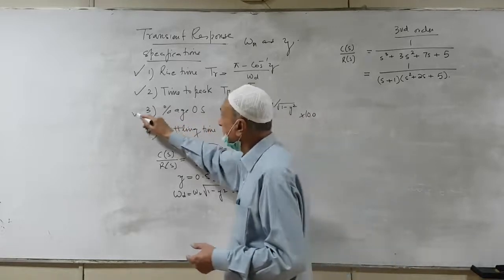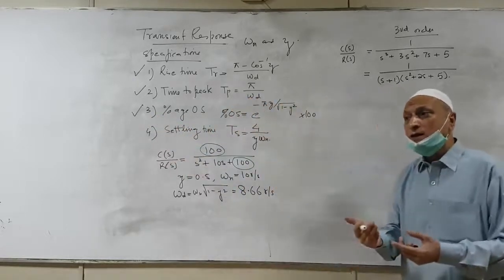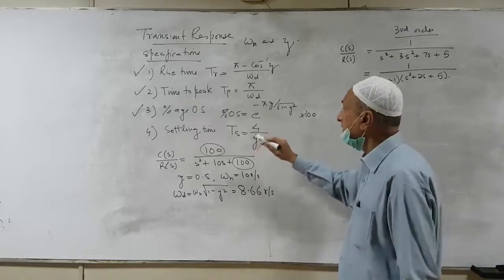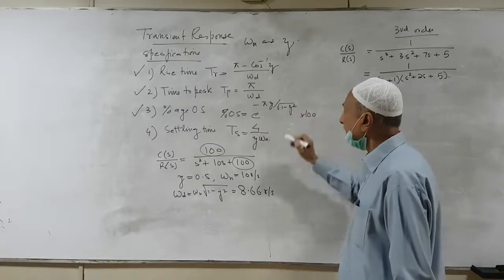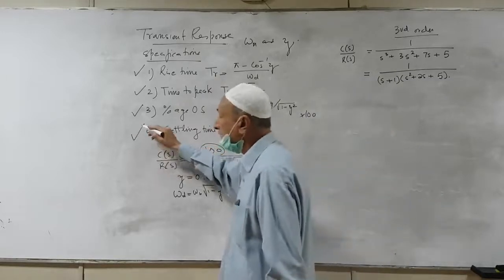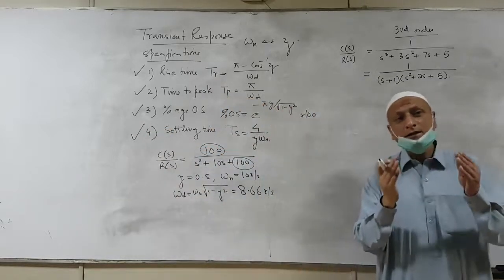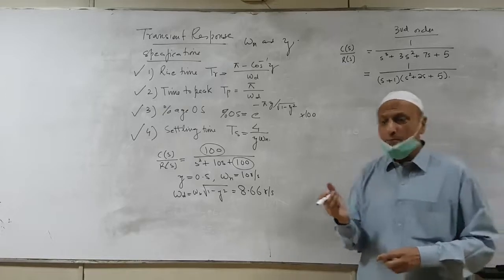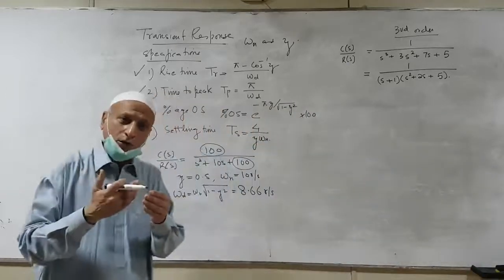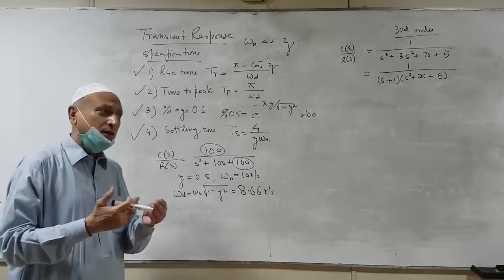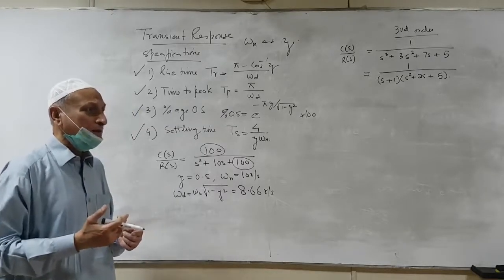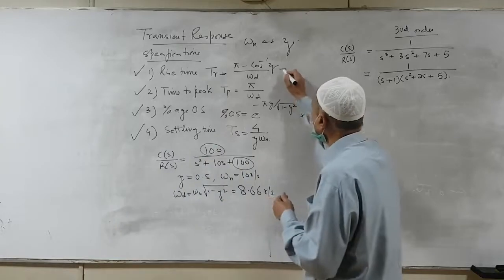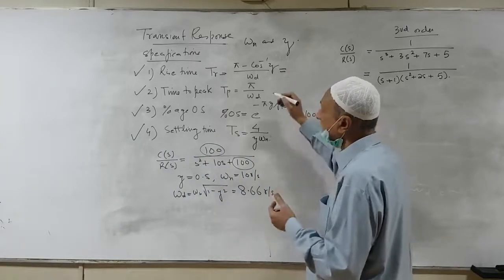Percentage overshoot is another very important specification — how much the transient response goes over and above the desired value. This is given by this expression. Finally, we have settling time: how much time it takes for the transient response to settle down to a prescribed value. We are not making sure it will be zero; a tolerable value of plus or minus two percent of the steady-state value is used. We can calculate all of these once we know zeta, omega n, and omega d.